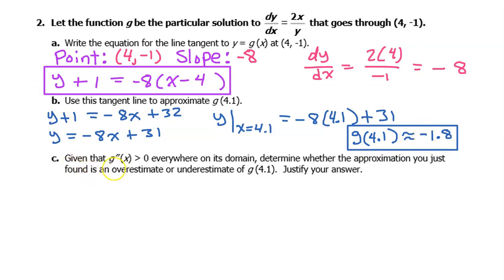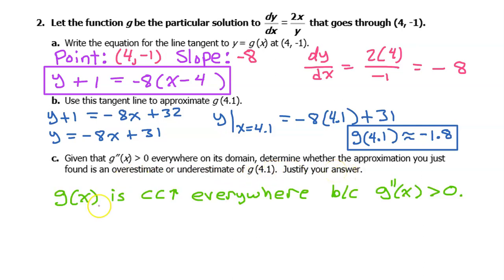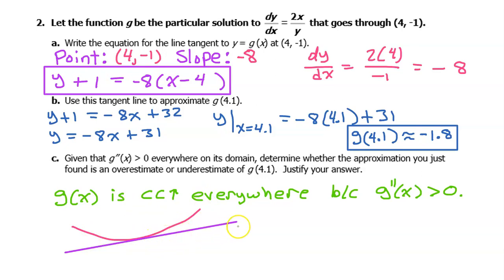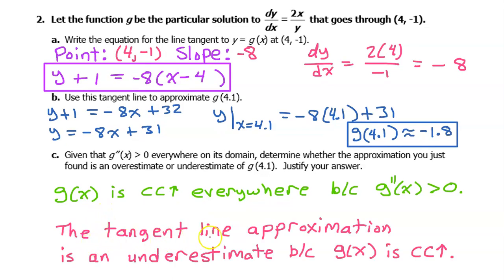For part C, given that g double prime of x is greater than 0 everywhere on its domain, determine whether the approximation is an overestimate or underestimate of g at 4.1. Since g double prime is greater than 0, g of x is concave up everywhere. When a function is concave up, the tangent line always lies below the curve, so the tangent line approximation is an underestimate because g of x is always concave up.